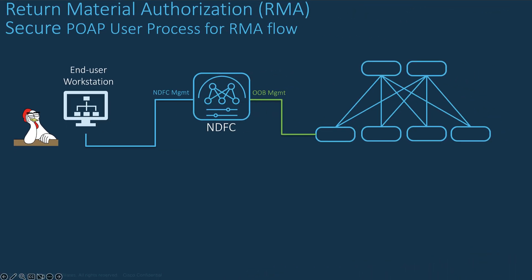Now let's talk about RMA — Return Material Authorization. This is another crucial process that NDFC can automate using two approaches: either you can leverage POAP for a zero-touch process, or you can go through a simple manual RMA. To use the POAP RMA flow, you need first to configure the bootstrap parameters from the fabric settings. The key difference is that POAP will automatically send the new config file during the boot process of the switch, and NDFC runs the DHCP server functions for this.